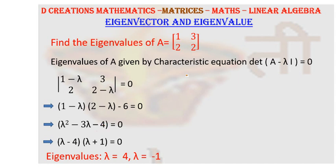So the equation is lambda square minus 3 lambda minus 4 is equal to 0, and you can factorize it to get lambda minus 4 into lambda plus 1 is equal to 0.